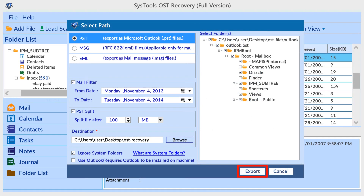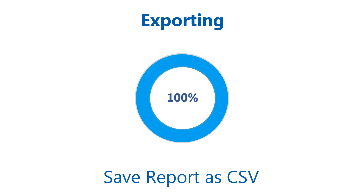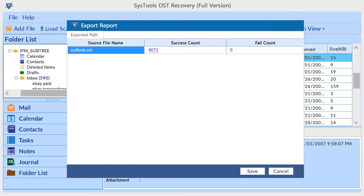Click the export button to start the conversion process. The tool shows the exporting progress and at the end generates a status report. You can save it as a comma-separated file.